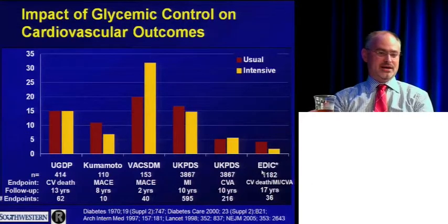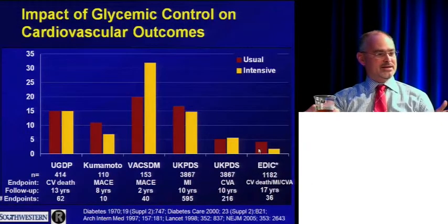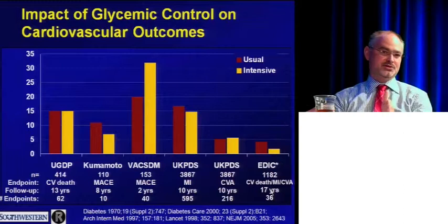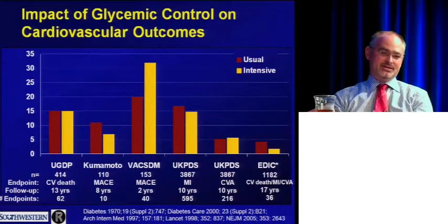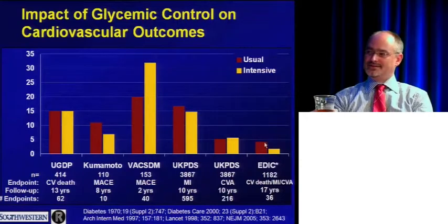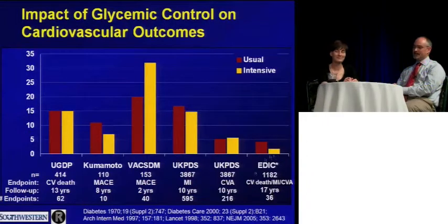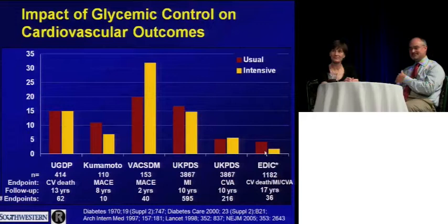The DCCT trial — type 1 diabetes patients — followed epidemiologically for 17 years total, with 8 years on protocol comparing tight control versus usual care. The follow-up data showing a cardiovascular signal is based on 24 versus 12 events — only 36 total cardiovascular events. This is the proof of concept the diabetologist community used, but we really don't know what we're doing with cardiovascular disease.